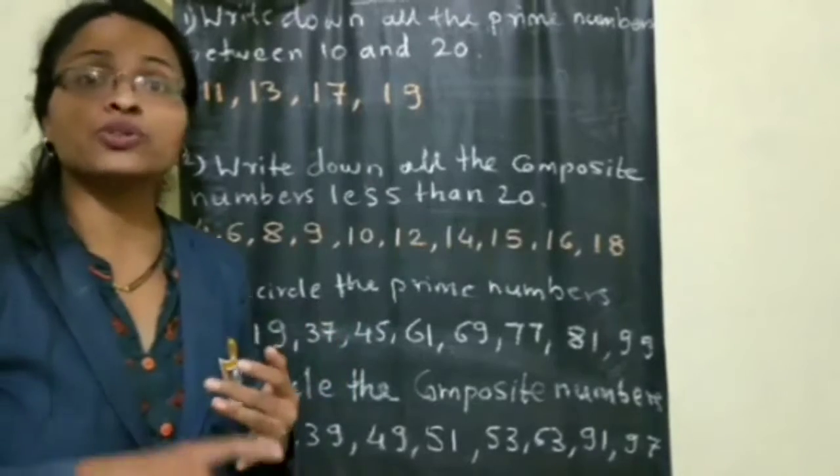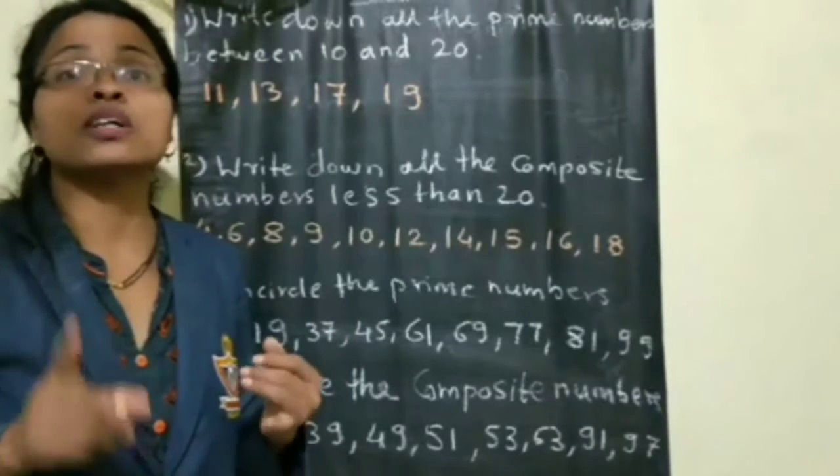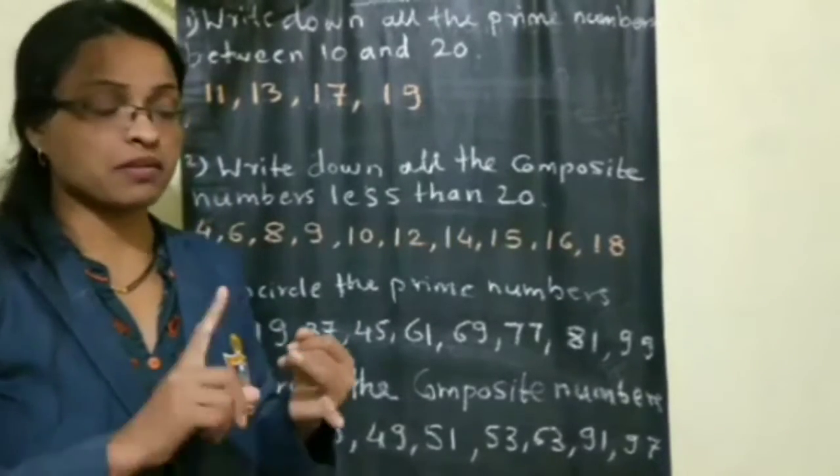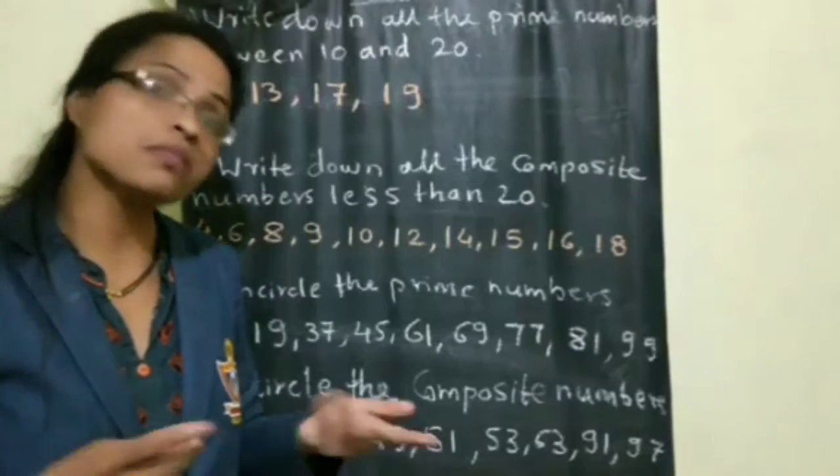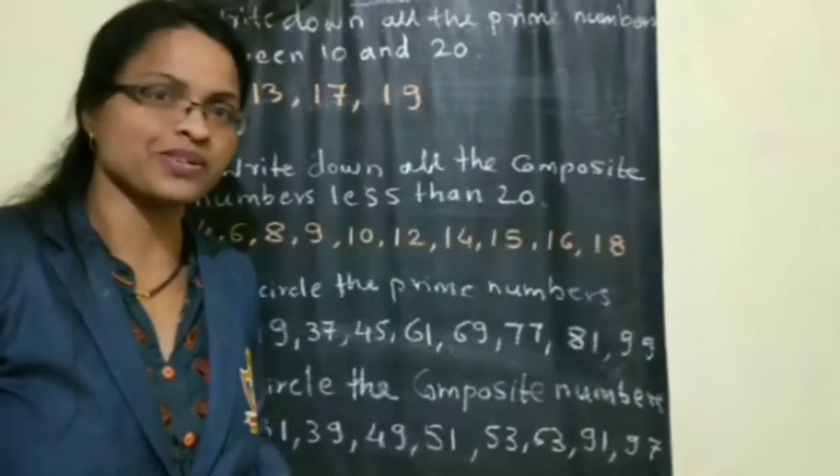For all of this, you should know thoroughly what is meant by prime number, composite number, even number, and odd number.